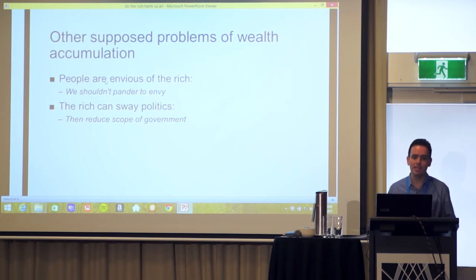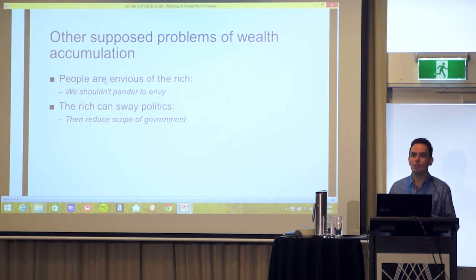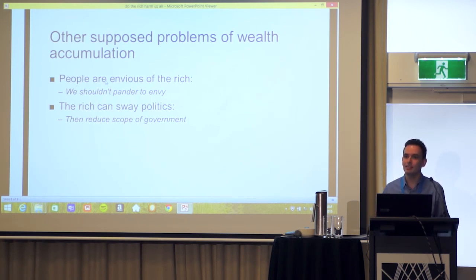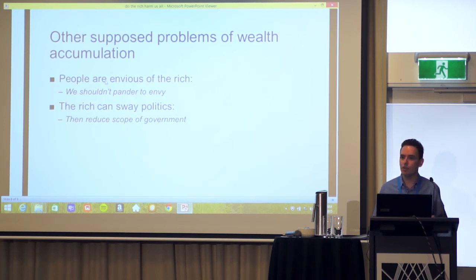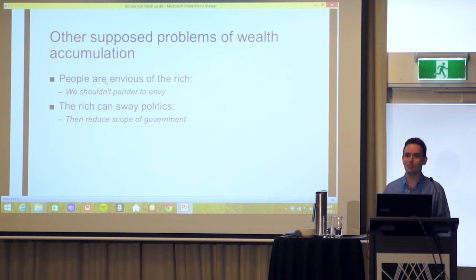There are other alleged problems. One argument against wealth accumulation by the rich is that it creates envy, and that government should do something about it — but why should society pander to envy? We rightly say society should not pander to fear or hate, so why pander to envy? Lastly, it is argued that wealth accumulation is bad because the rich can sway politics. The obvious response is to reduce the scope of government — if you reduce the scope of government, it's harder for people to sway it.